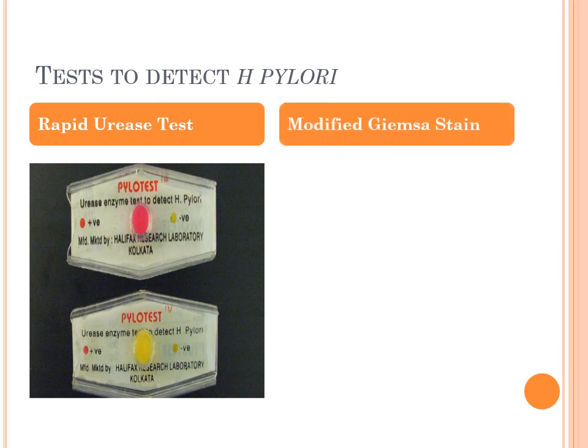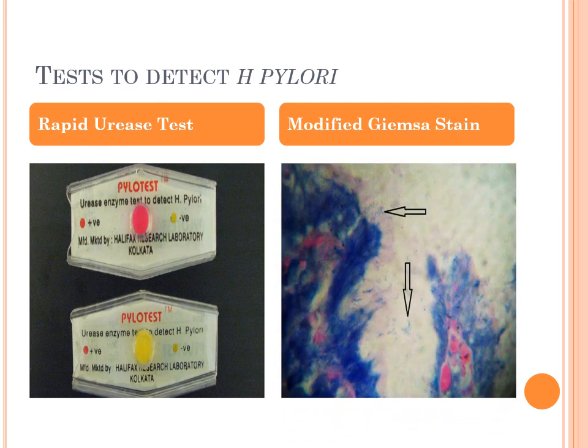In modified Giemsa stain under the microscope, you can see in the superficial mucus layer small aggregations of bacilli — indicated by arrows — which have taken up the blue color stain of modified Giemsa.